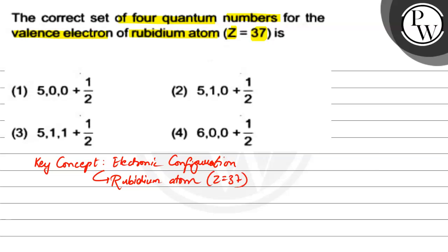If we have the nearest noble gas, we have krypton. So we can write for rubidium atom, krypton, and then we can write 5s¹ because the fifth shell is going to be the next shell.